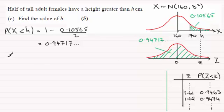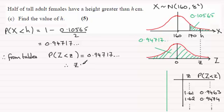So what I'd want to write here is therefore, from tables, essentially, we see that the probability of Z being less than the observed value z, which gives us 0.94717 and so on. This probability here is approximately, we'll say therefore, z is approximately 1.62.